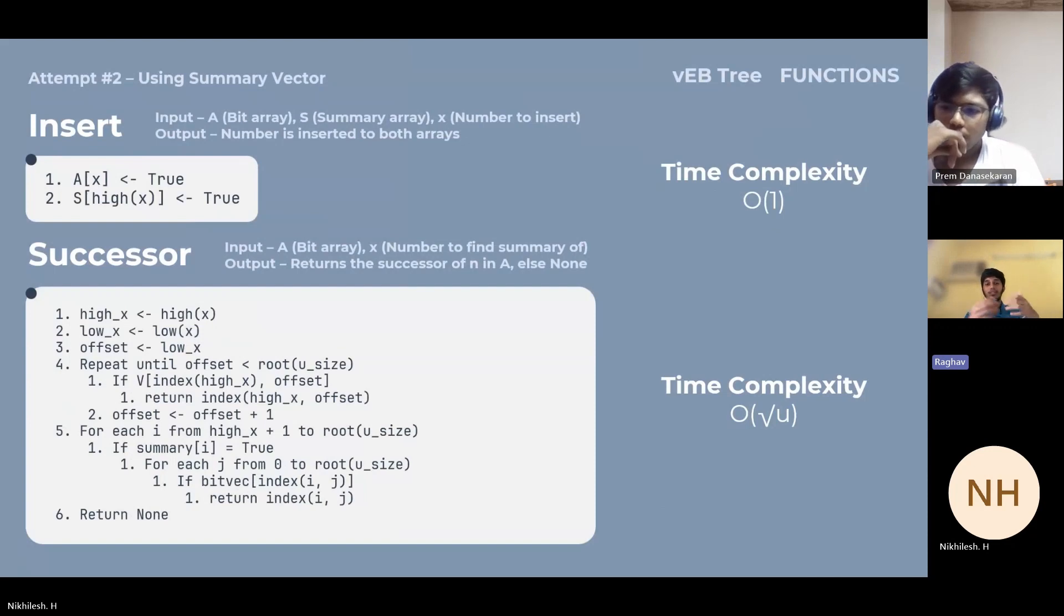For the second attempt, we start using a summary vector. As I already told you, summary vectors basically have information of these sub-universes, also known as clusters. When it comes to insertion, you're first going to insert in that particular cluster and then you're going to insert into the summary.